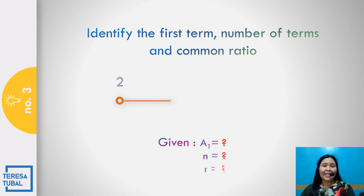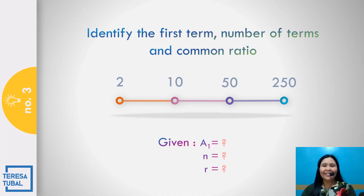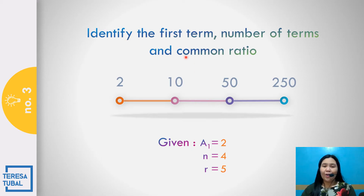Question number three: Find the first term, the number of terms, and the common ratio in the geometric sequence 2, 10, 50, and 250. Correct! The first term is 2. The number of terms is 4, so n is 4. The common ratio is found by dividing the second term by the first term: 10 divided by 2. The answer is equal to 5.